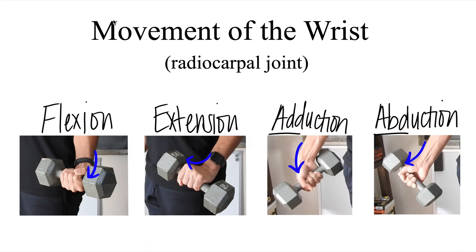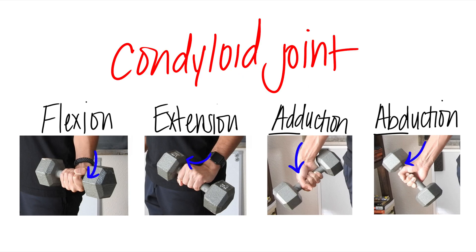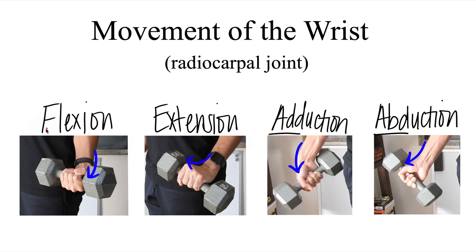Today we're going to cover the movement of the wrist, specifically the radial carpal joint. This joint is known as a condyloid joint, which allows for movements such as flexion, extension, adduction, and abduction at the wrist.